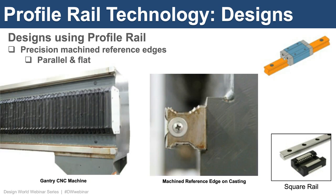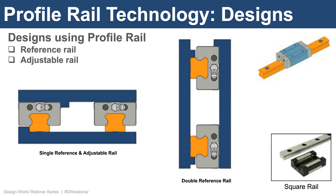Here's an example of a machine using a parallel installation of profile rails — a gantry-style CNC machine. The base structure is made from a large casting that's machined to create a mounting surface and a reference edge that is very flat and parallel. The machined reference edge is used to align the primary rail. Having two machined reference edges enhances the ability to align two rails in parallel. For this design, the accuracy of the profile rail will mimic the precision of the machining of the base structure.